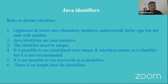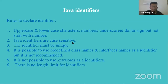It is possible to use predefined class names, interface names as identifiers. For example, the predefined class name 'String' from the java.lang package can be used as an identifier in Java, but it is not recommended because it creates difficulty in reading and maintaining the code. It is not possible to use keywords as identifiers, and there is no length limit for identifiers.